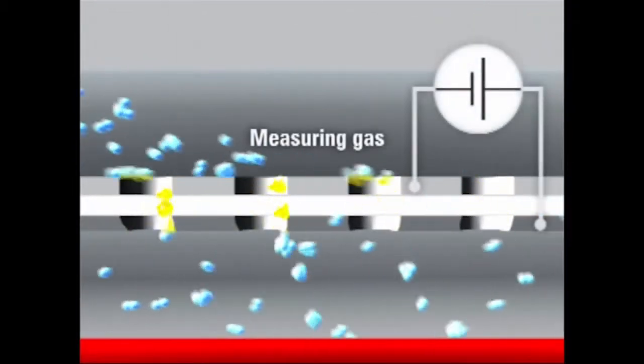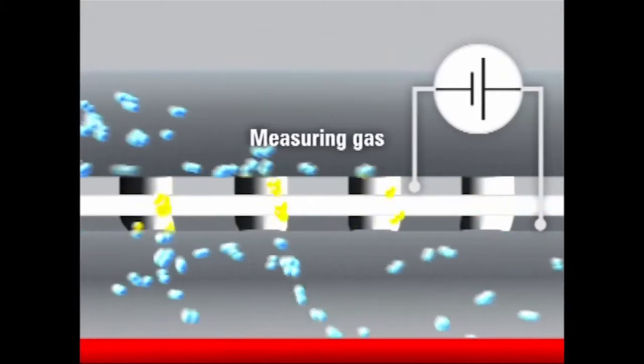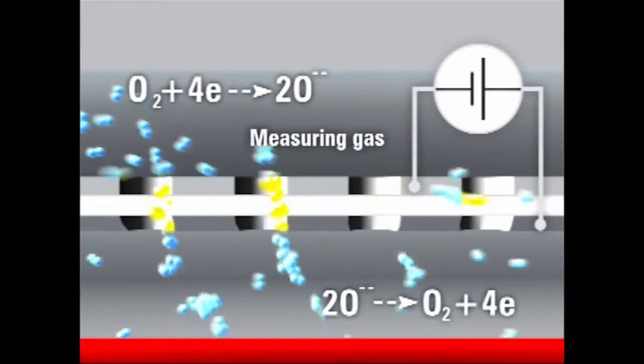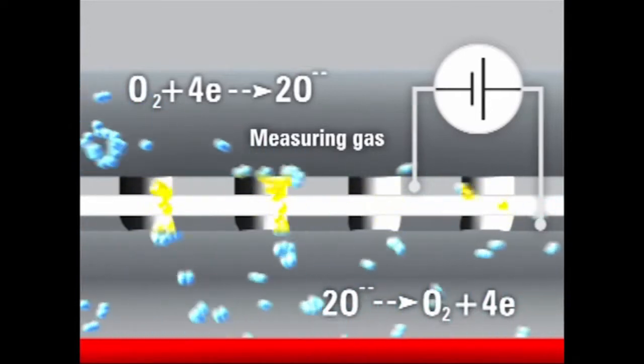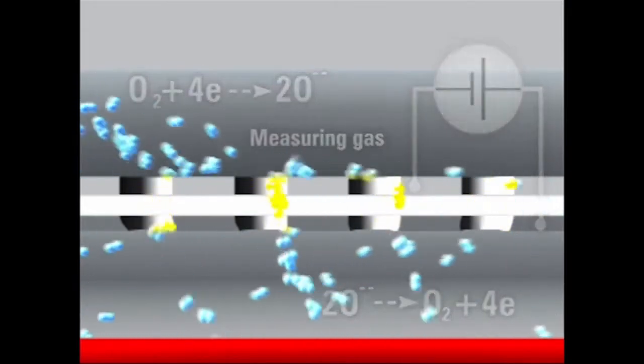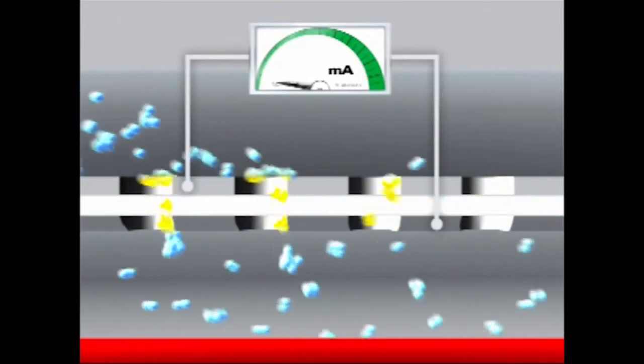Impressing a voltage between the two electrodes of the zirconium measurement cell forces a current to flow. Four electrons flow per oxygen molecule. During constant gas flow, the current level increases and hence also the measured signal in linear relation to the oxygen content in the measuring gas. In other words, 0% oxygen means there is no flow of current.